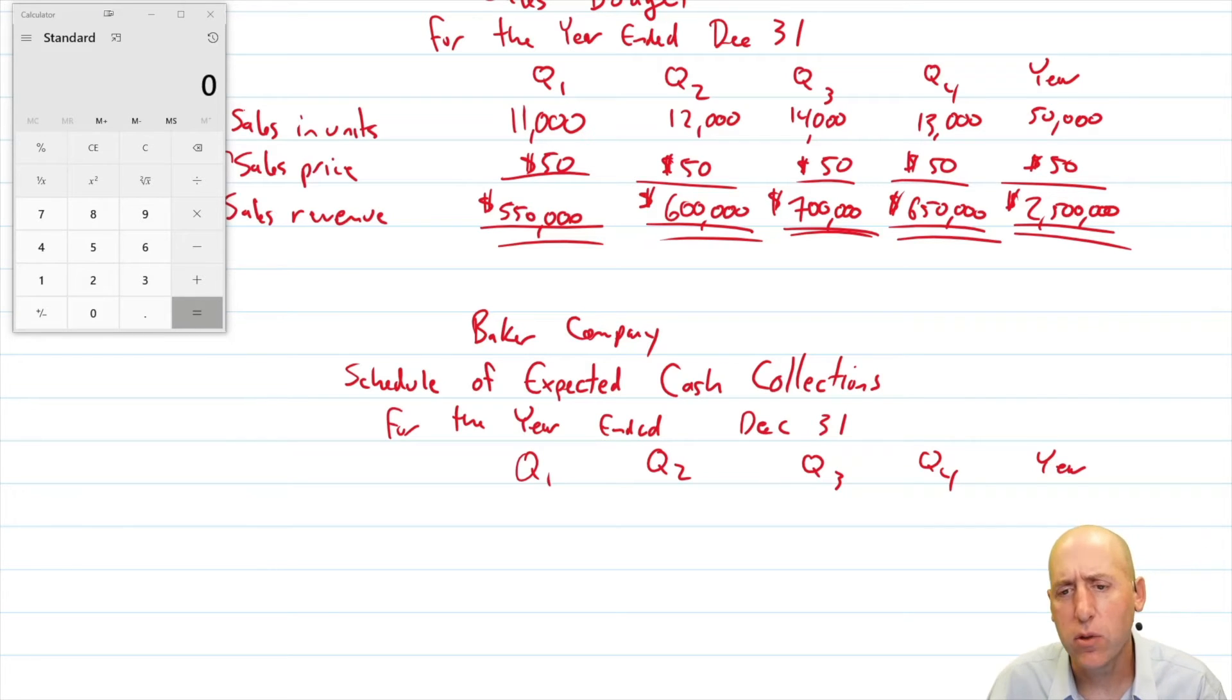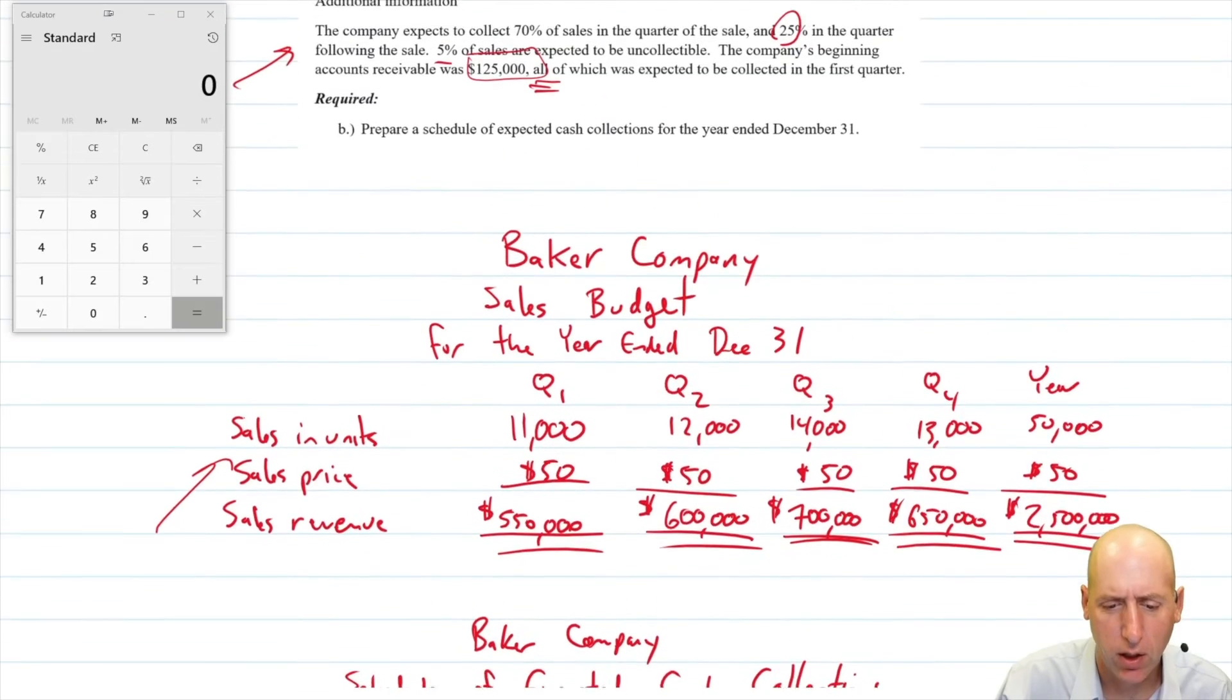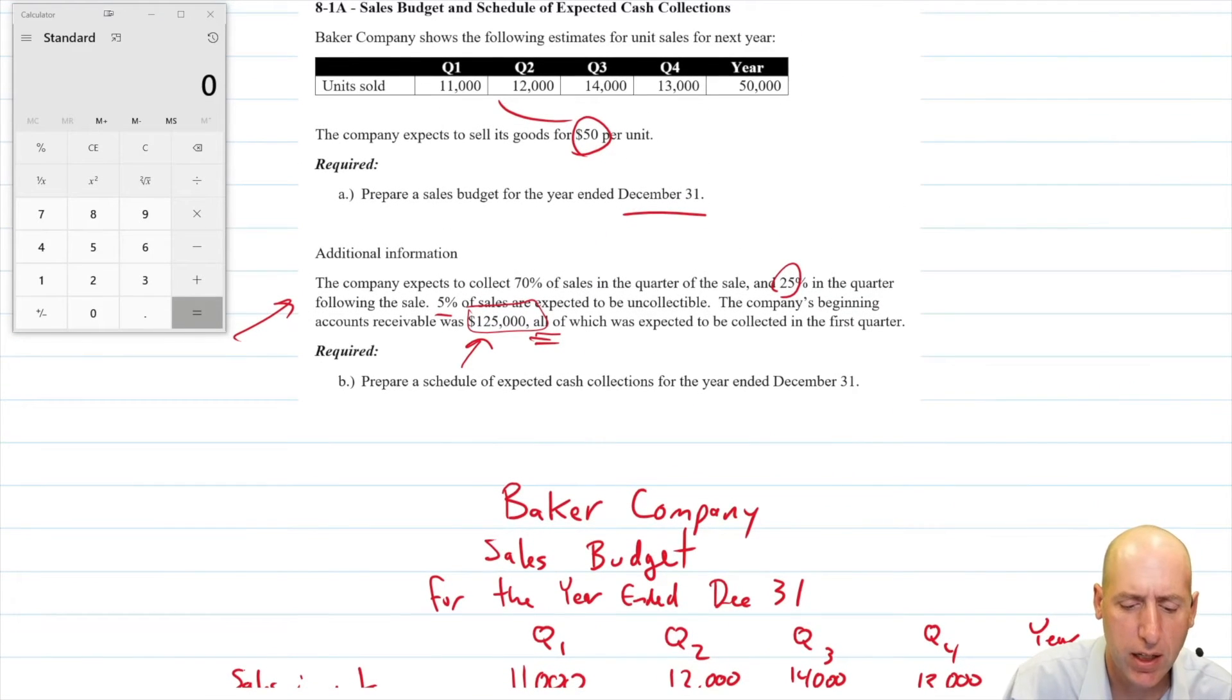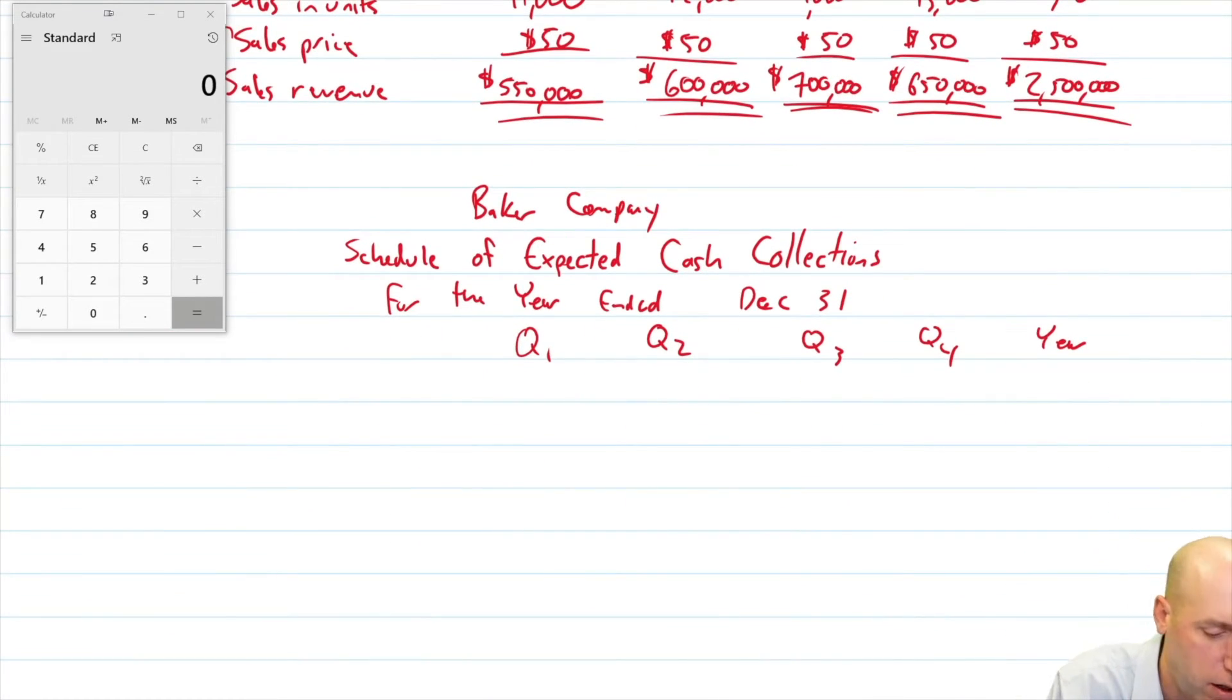So what do we collect? Well, the first thing we're going to collect is actually this beginning account receivable. It says accounts receivable was 125,000, all of which was expected to collect in the first quarter. So let's start with that. Our beginning AR of 125,000 is all coming in in quarter one, nothing in quarter two, nothing in quarter three, nothing in quarter four, you don't need to put those dashes, I just leave them blank. Typically, if you put the dashes, it's no big deal. There we have it 125,000 from beginning AR all comes in in quarter one.